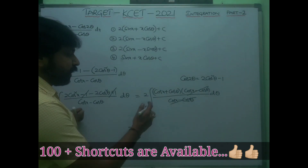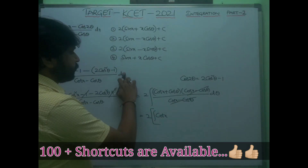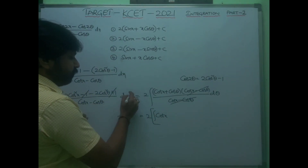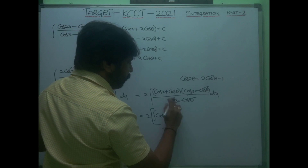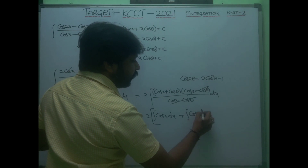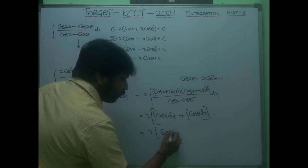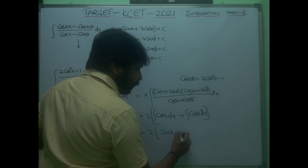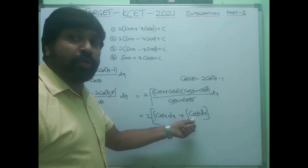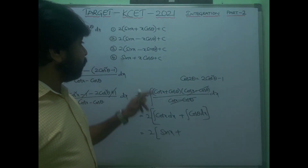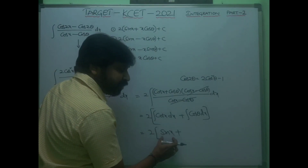Now at this point is the twist. You have 2∫cos x dx + 2∫cos θ dx. A common student mistake is writing the integral of cos θ as sin θ + C. But here the variable of integration is x, not θ.